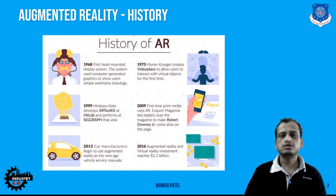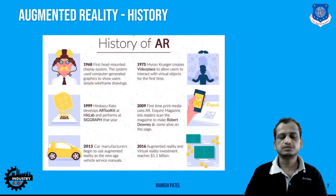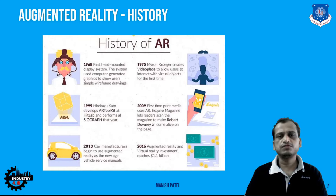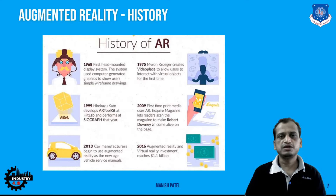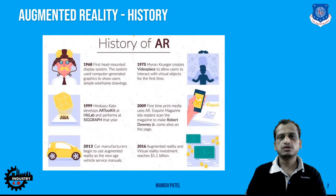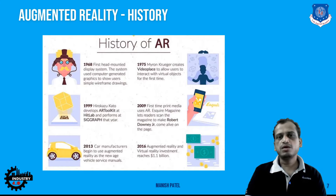Now let's look into the history of augmented reality. In 1968, head-mounted displays were first developed. In 1975, Krueger developed VideoPlace, where users could interact with virtual objects. In 1999, Hirokazu developed AR Toolkit, a key software for developing AR apps. In 2009, Esquire magazine featured augmented reality with Robert Downey Jr. on their front page. In 2013, car manufacturers started using AR in service manuals and dashboards. By 2016, it had crossed the billion-dollar market worldwide.